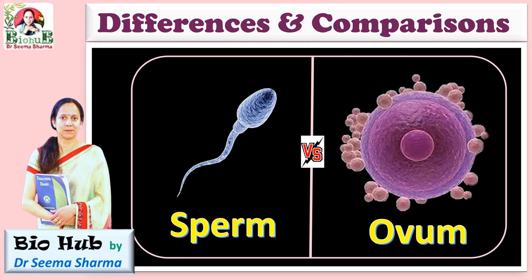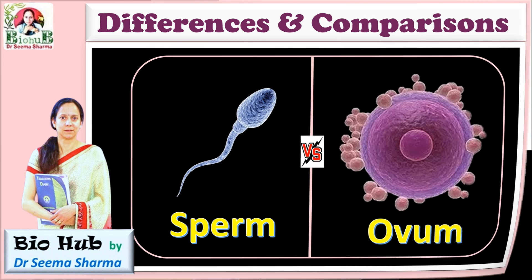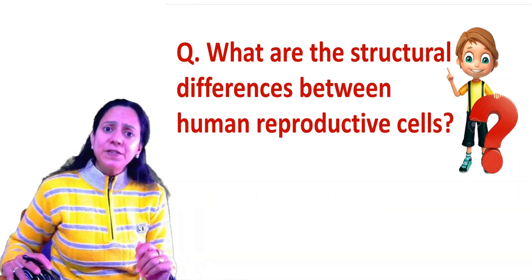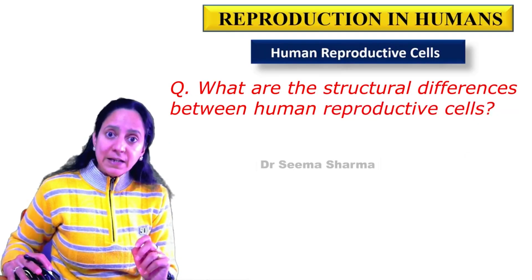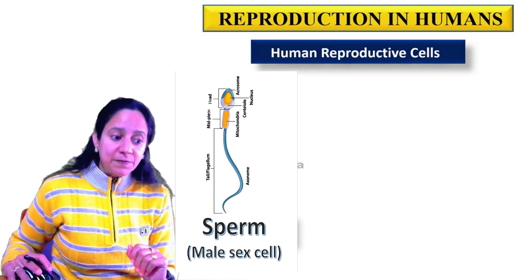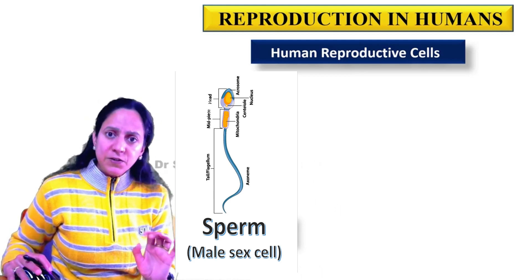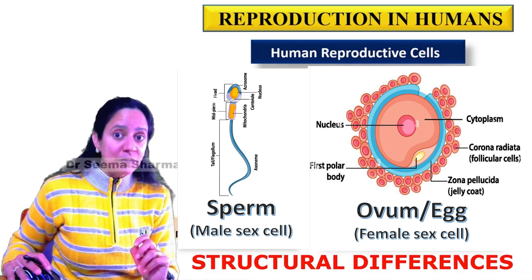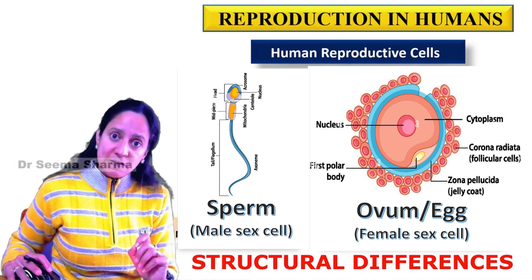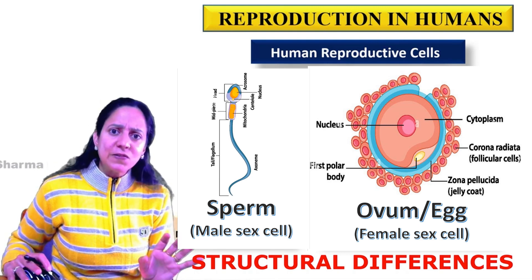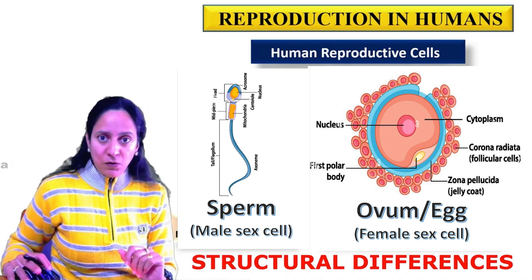Welcome viewers. In this video I have covered differences between sperm and ovum. If the question is what are the structural differences between human reproductive cells, in that case you have to draw sperm or male reproductive cell, label its various parts, draw the female reproductive cell that is ovum, and label its basic parts. This will be the answer of what are the structural differences between sperm and ovum.